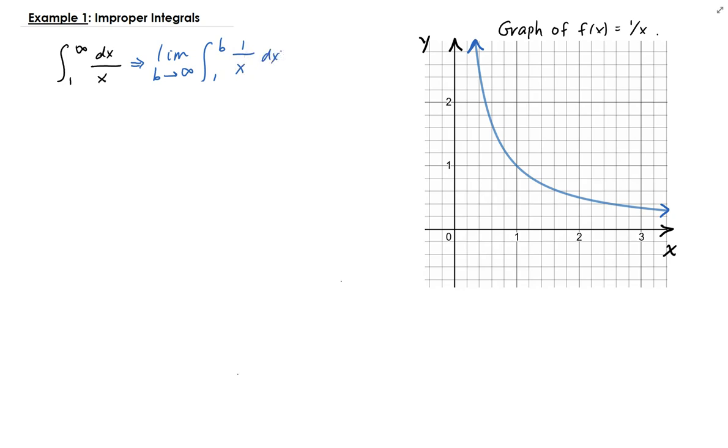To do this, we need to evaluate the integral and then take the limit of that result. If the limit is converging to some specific value, then we say that that integral is converging. Otherwise, if the limit is approaching infinity or negative infinity, the result is divergent.